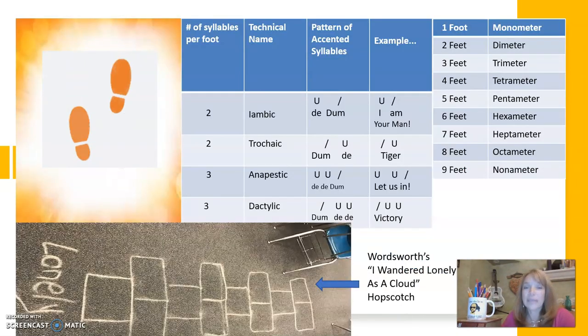So to recap, there are four major types of meter in English poetry. Iambic, trochaic, anapestic, and dactylic, the first two being two-syllable feet, and the last two I mentioned being three. And there are a couple of ways to remember them. First of all, they are opposites of each other in pairs. And also, they actually make the pattern of at least one form of the word that they represent.